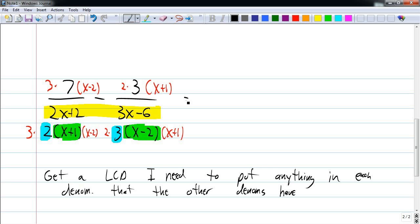Okay, so let's get a hold of this. My first fraction, its denominator is 6 times x plus 1 times x minus 2. And in the numerator, I have 3 times 7 is 21 times x minus 2. Now, I'll have to multiply that out later. That's okay.